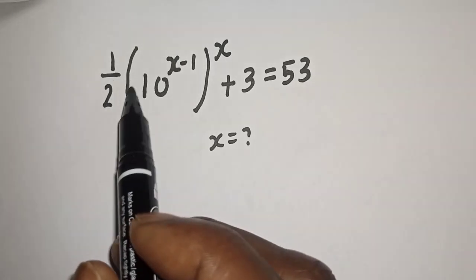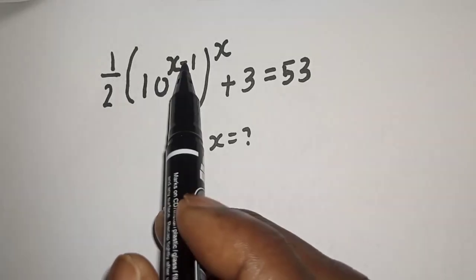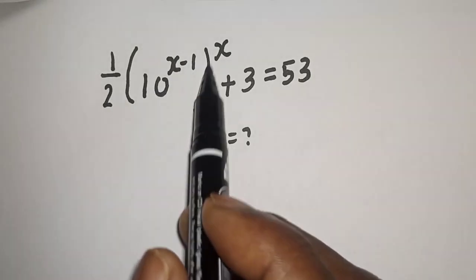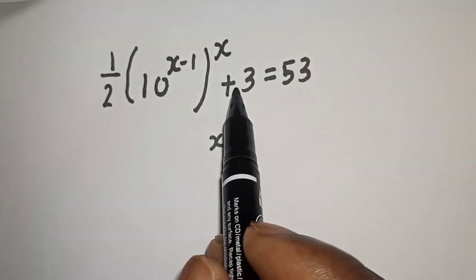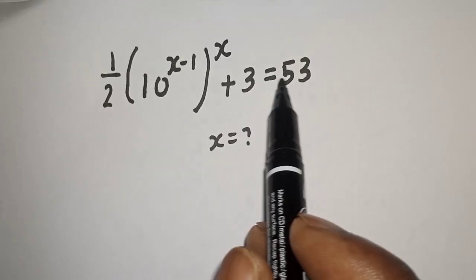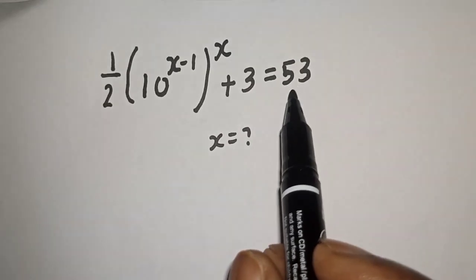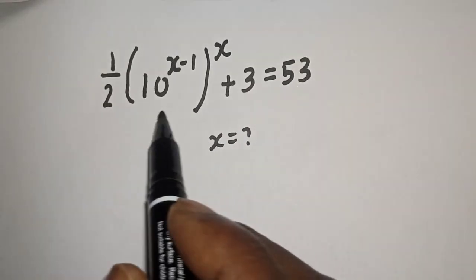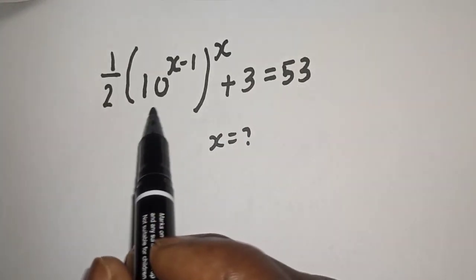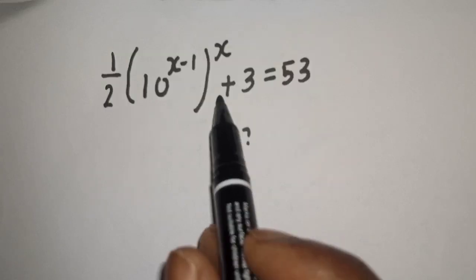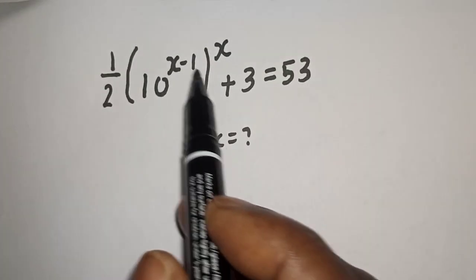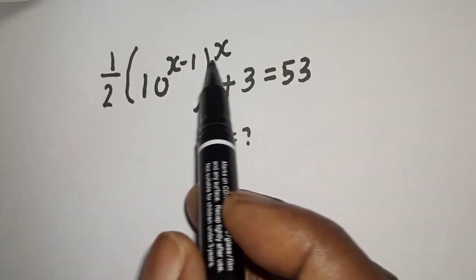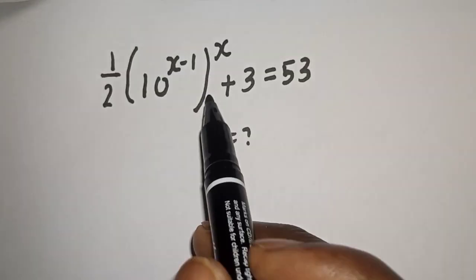We have the equation: (1/2)(10^(x−1))^(x+3) = 53. What is the value of s? Hi everyone, welcome to my class. In this class, we quickly want to find the value of s from this given exponential equation.